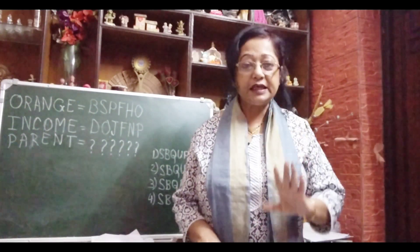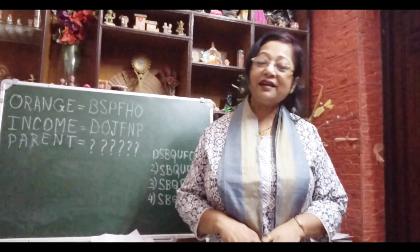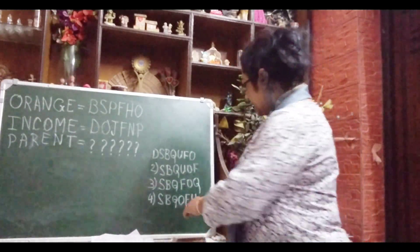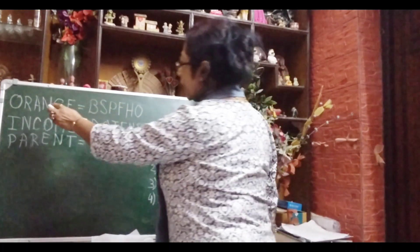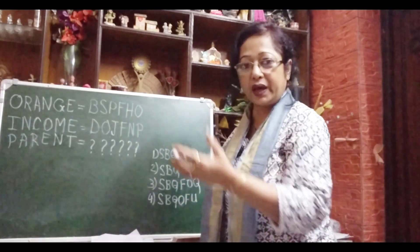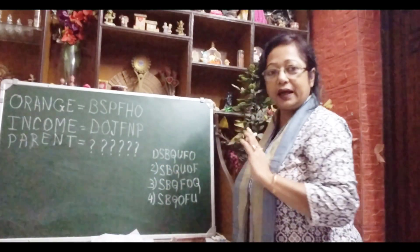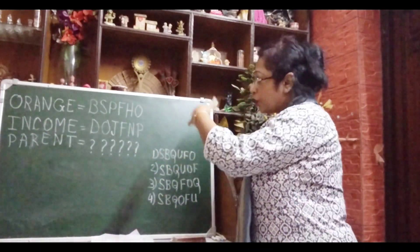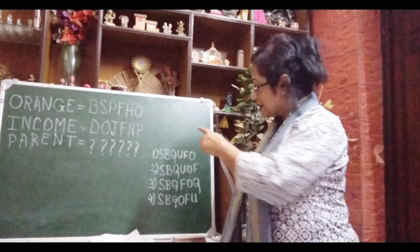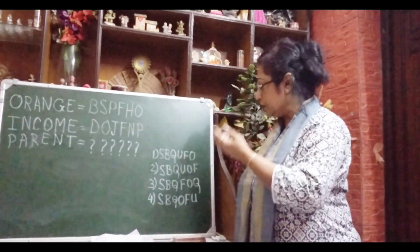It is not that difficult, children. Try to understand the trick — this is an easy one. Try to understand, learn it, and enjoy it. Here it is: it is written O-R-A-N-G-E, and orange equals B-S-P-F-H-O. The letters are given this way, and here there are question marks. We have to find out which letters will come here, and four options are given. We have to check which option our answer matches.